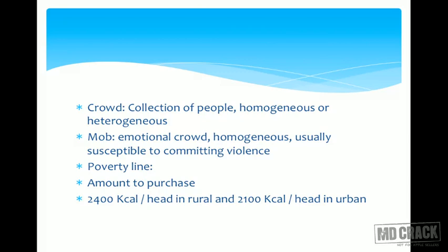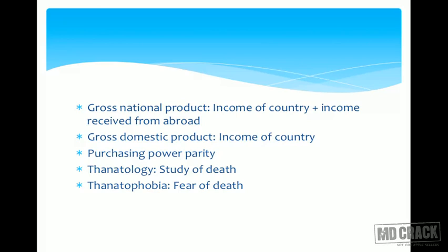Poverty line is defined as the amount of money required to purchase 2400 kilocalories per day in a rural setup and 2100 kilocalories per day in an urban setup. That is the definition of poverty line. These numbers are important to remember: 2400 kilocalories for rural and 2100 kilocalories per head for urban — these are per head kilocalories.